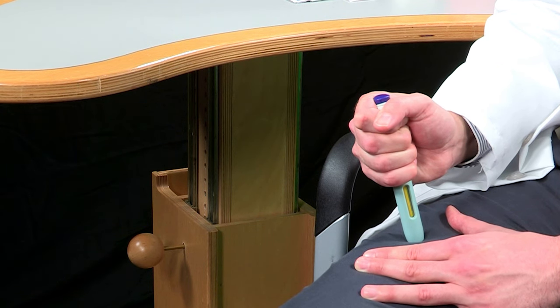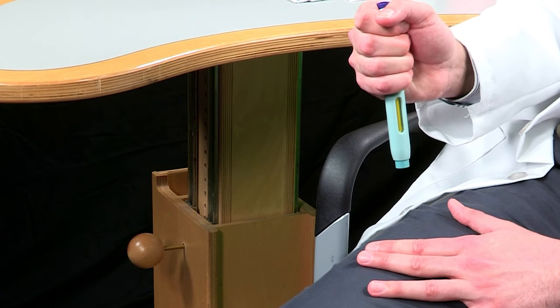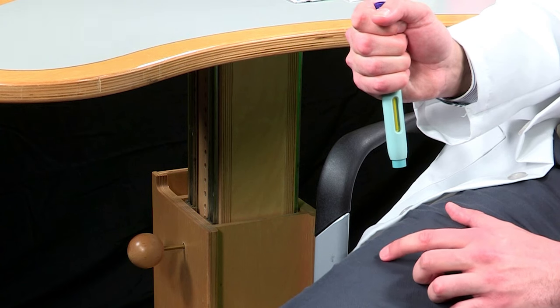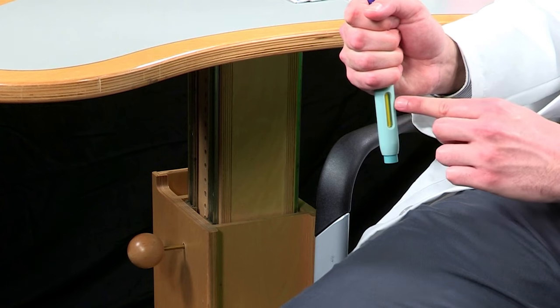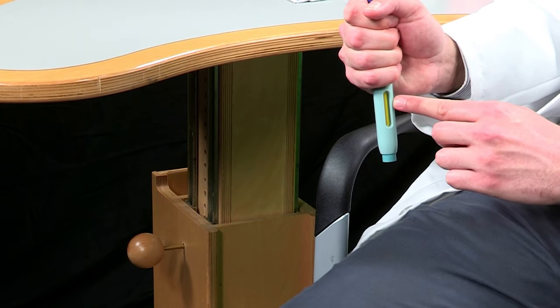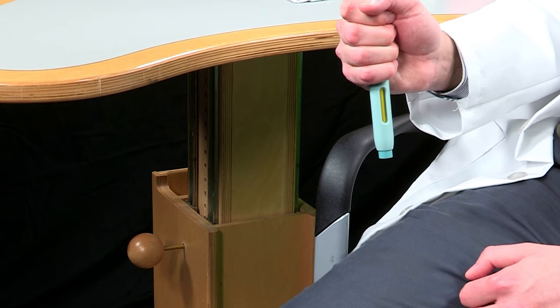After you remove the autoinjector from your skin, the needle will be automatically covered. This is important. When you remove the autoinjector, if the window has not turned yellow or if it looks like the medicine is still injecting, this means you have not received a full dose. Call your healthcare provider.